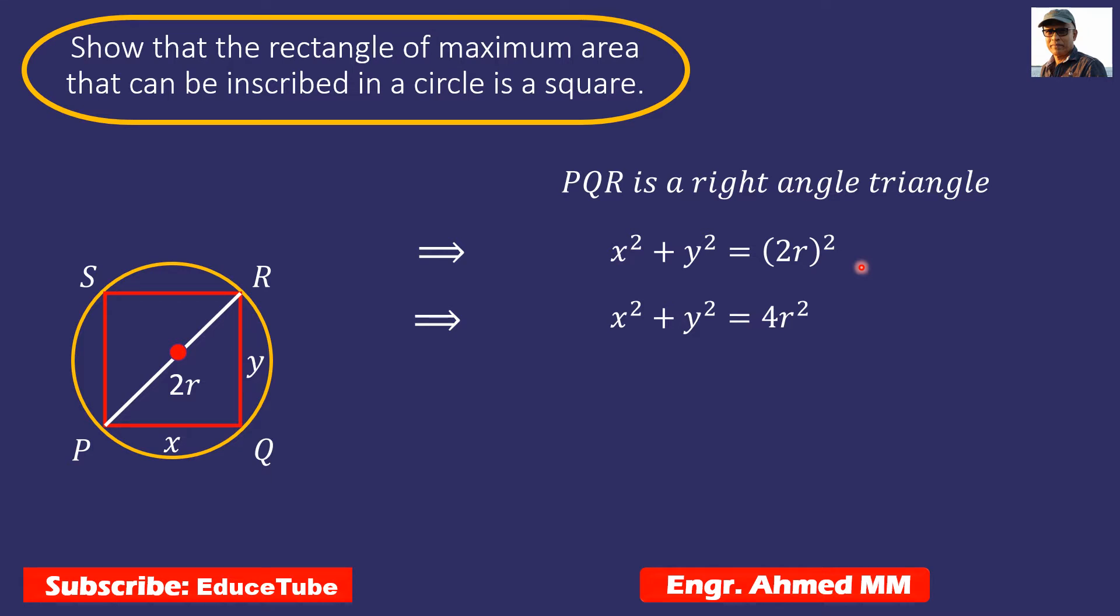Now we need to find the equation in such a way that we will get the value in terms of x for y. So the equation will be y = √(4r² - x²).